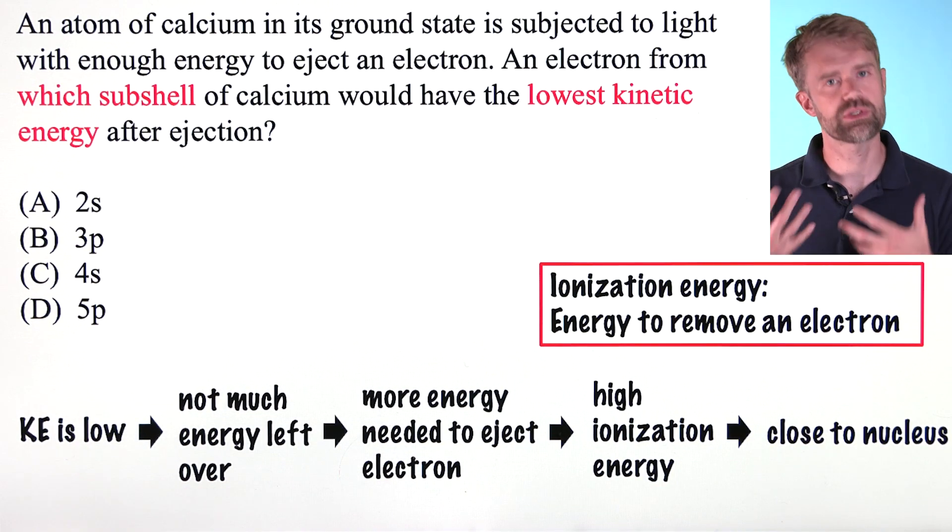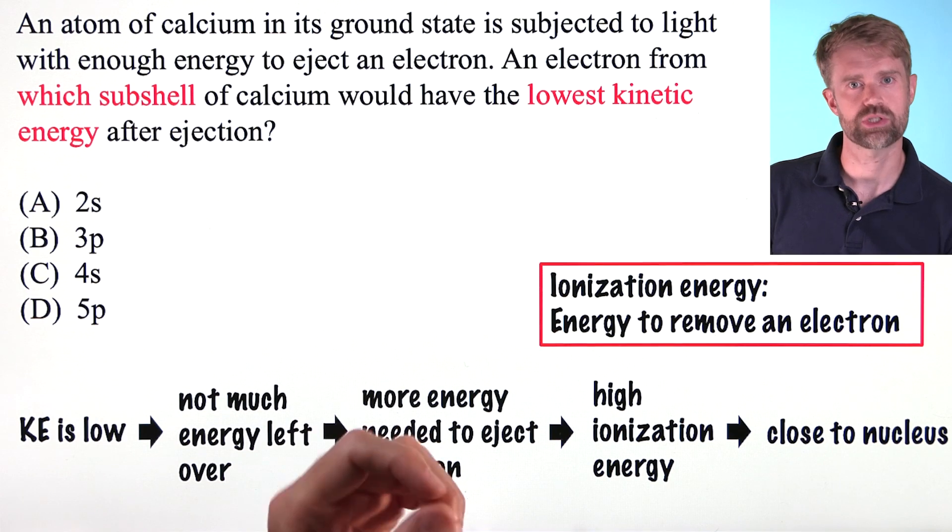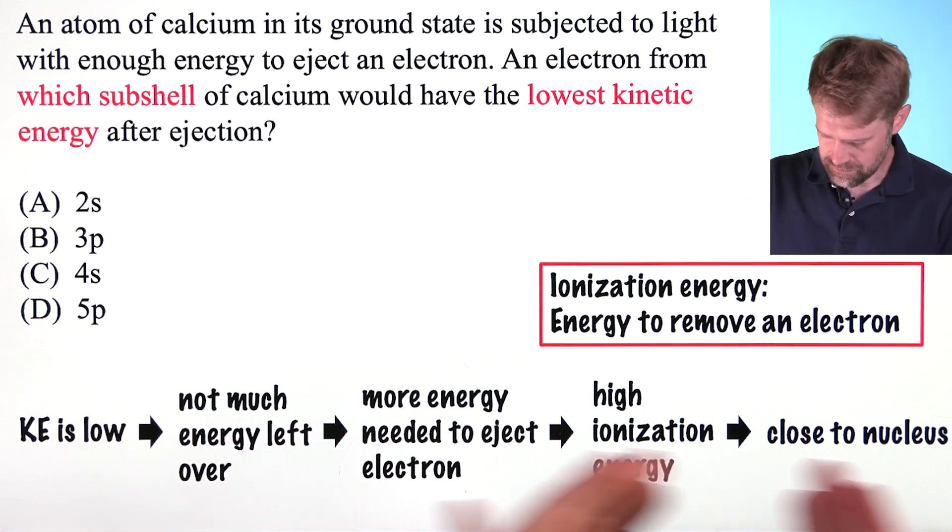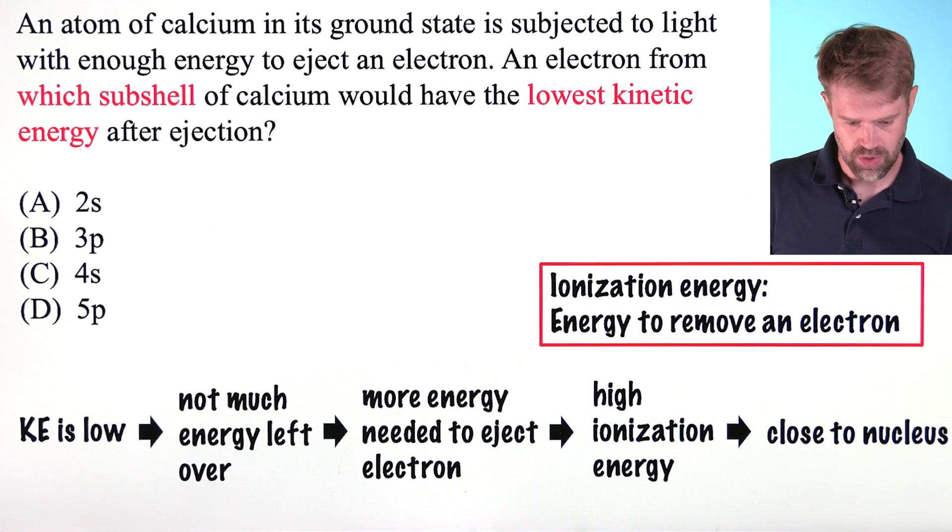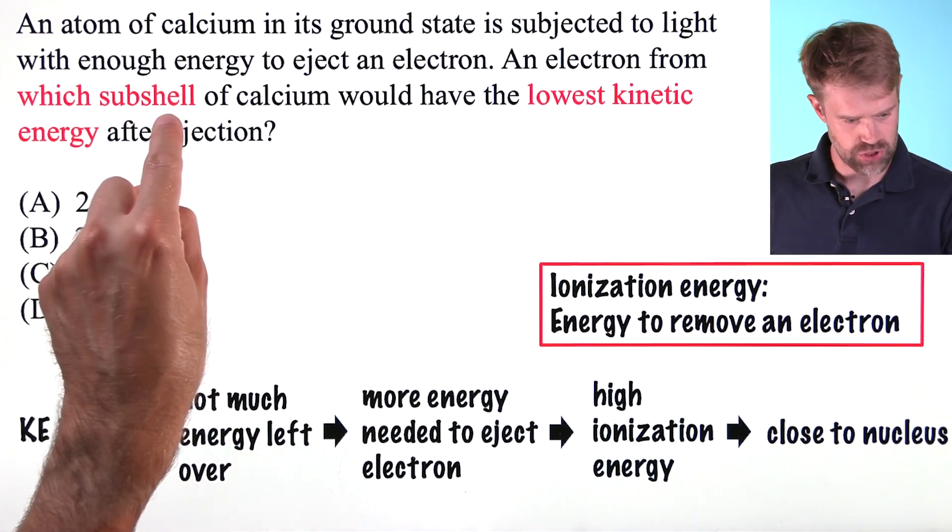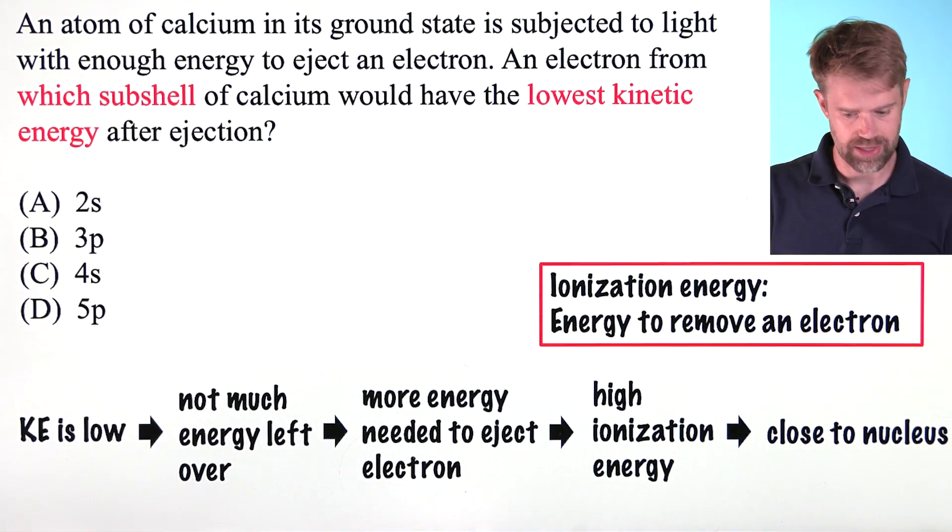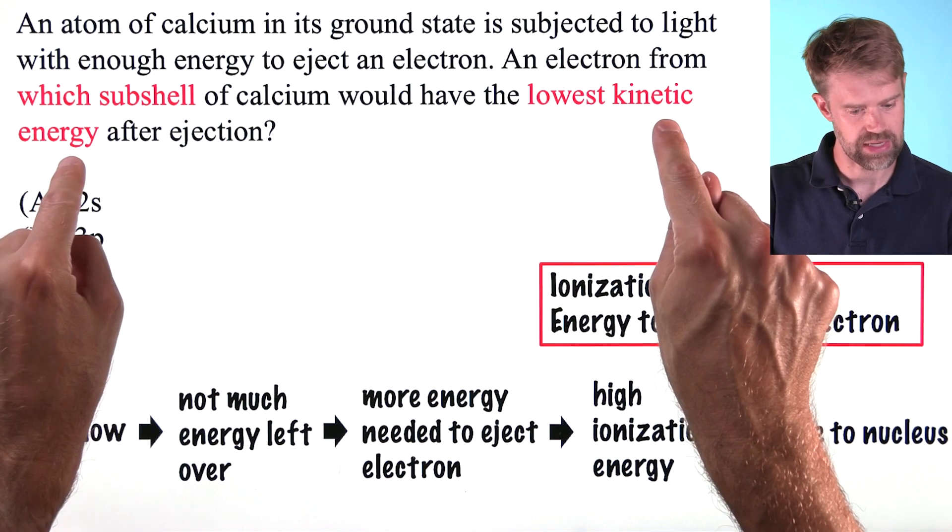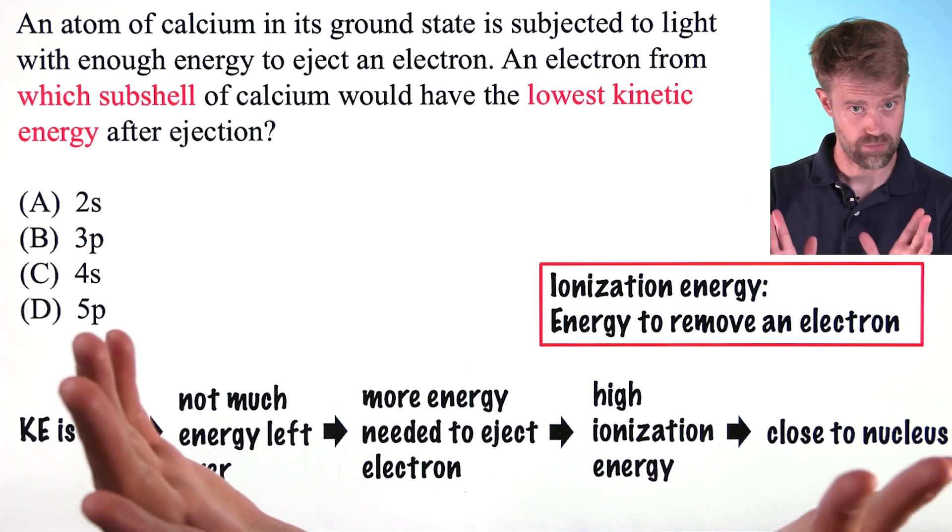So we can use all this information to answer the question step by step. Here's our thought process. We're asked which subshell would result in an electron with the lowest kinetic energy. So here are the steps.